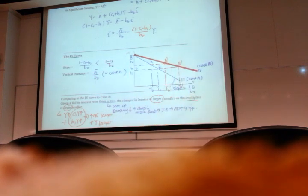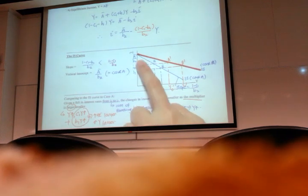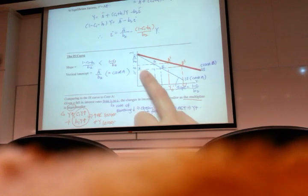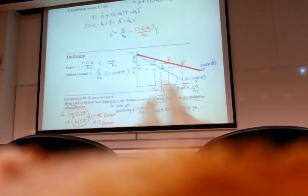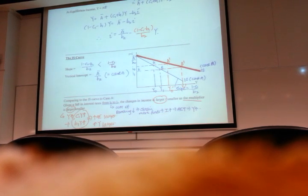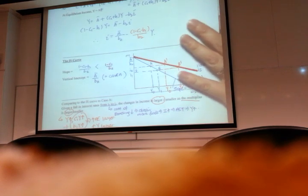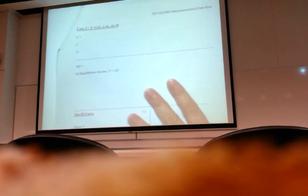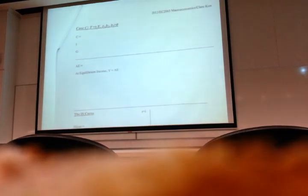But imagine if you don't have T bar, then the intercept can be different. So whenever we want to compare slope of IS, we try to hold the same intercept. Then it's easier to discuss changes in interest rate effects of income. That was case B. Now we move on to case C. So again, one minute, but be very careful. Check carefully slope and intercept.